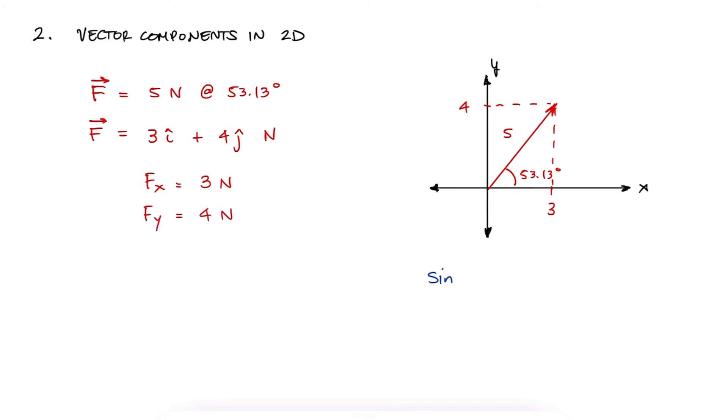To find these values here, we are using the definition of sine, which is the length of the side opposite to the angle you know, over the hypotenuse, and cosine, which is the length of the adjacent side to the angle you know, over the hypotenuse.